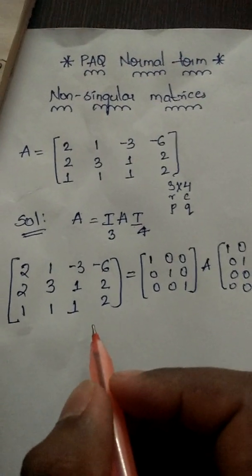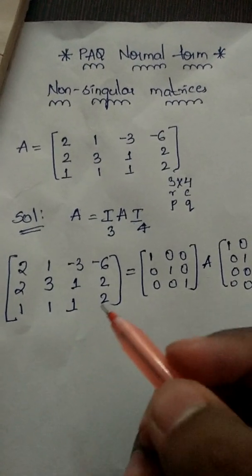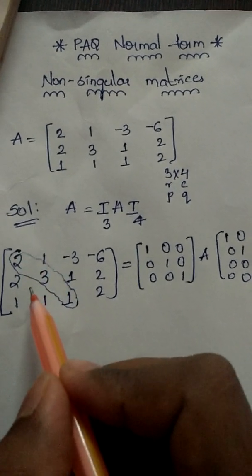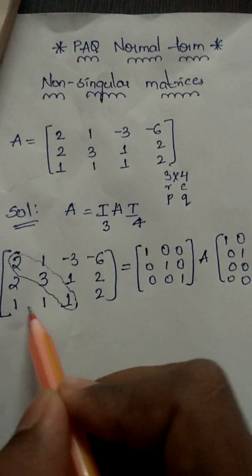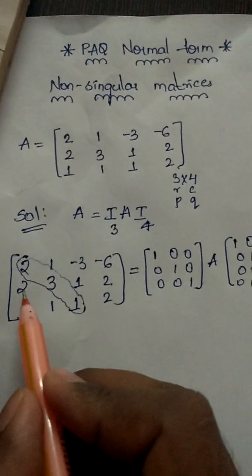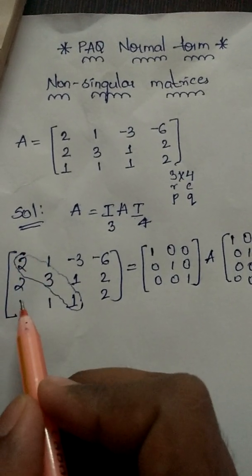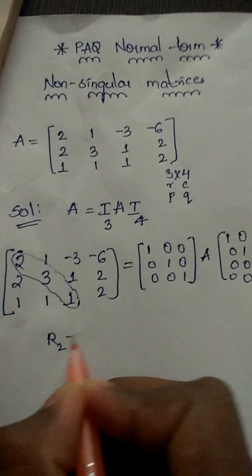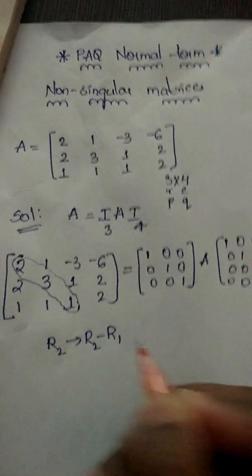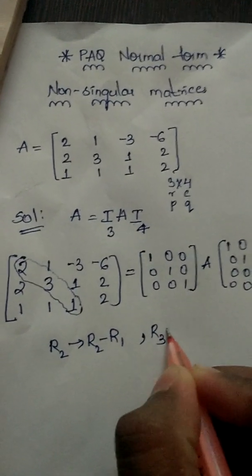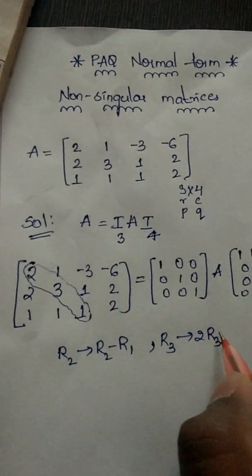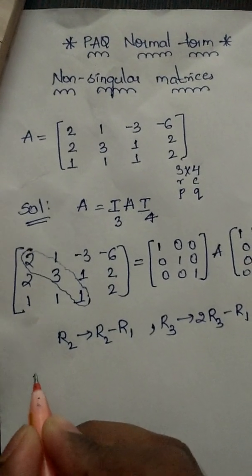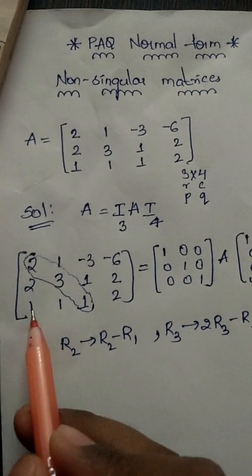Now for the normal form of this rectangular matrix, we consider the diagonal elements. We will try to make the lower diagonal elements zero — that is, the row 2 and row 3 first-column elements. Row 2 tends to Row 2 minus Row 1, and Row 3 tends to 2×Row 3 minus Row 1.